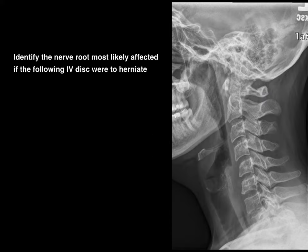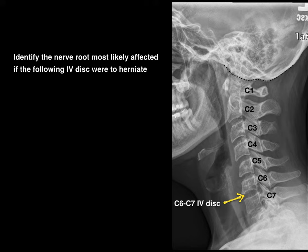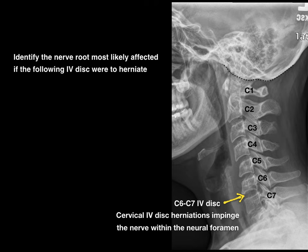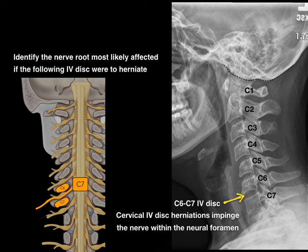Another question: identify the nerve root most likely affected if the following intervertebral disc were to herniate. In the diagram, the dotted line is the base of the skull; there's the first cervical vertebra C1, then C2, C3, C4, C5, C6, and C7 — which means that's a C6-C7 intervertebral disc. Cervical intervertebral disc herniations impinge the nerve within that neural foramen, which is between C6 and C7 — meaning the C7 root is being affected or impinged in this patient.